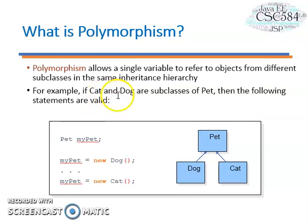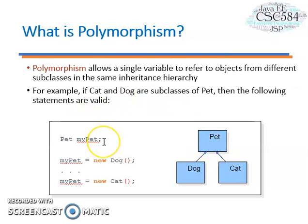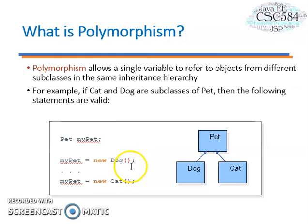For example, if cat and dog are subclasses of pet, then the following statements are valid. We declare 'Pet myPet' — so myPet is a variable. Then we create new Dog, and later on we assign myPet equal to new Cat.